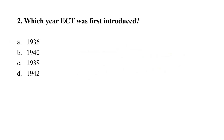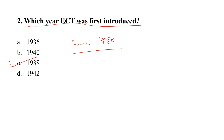Question number two: In which year was ECT first introduced? Option A: 1936. Option B: 1948. Option C: 1938. Option D: 1942. The correct option is option C — 1938. ECT was first introduced by Benny and Carletti in 1938, and from 1980 onwards it is considered to be a unique psychiatric treatment.